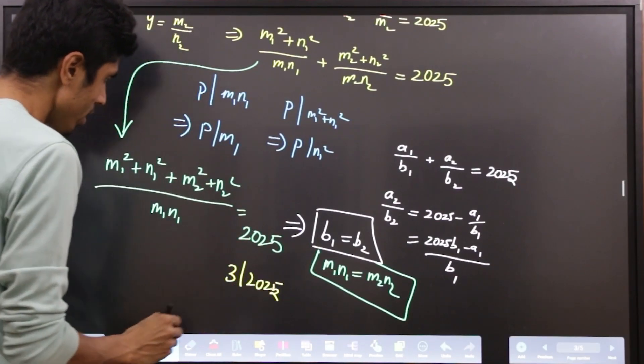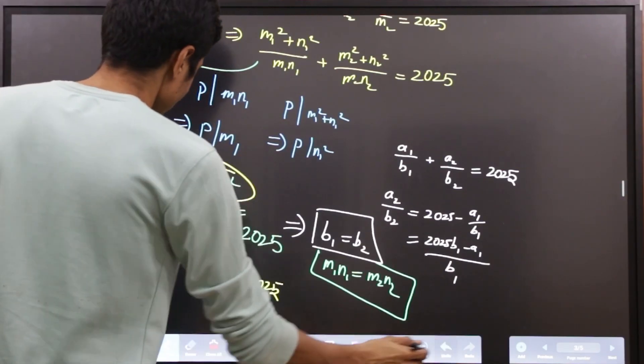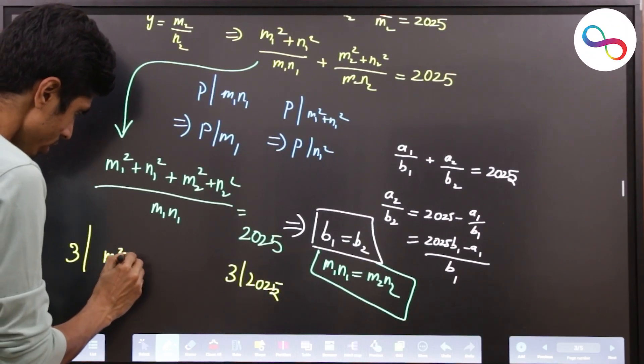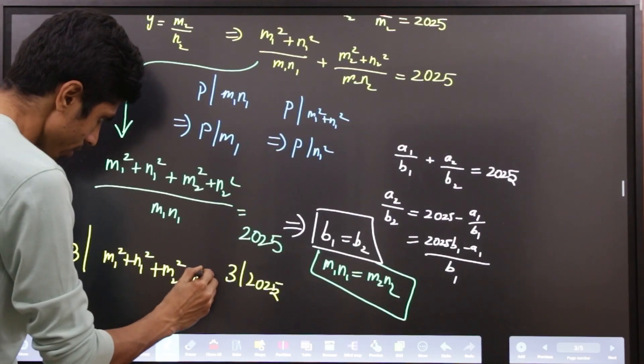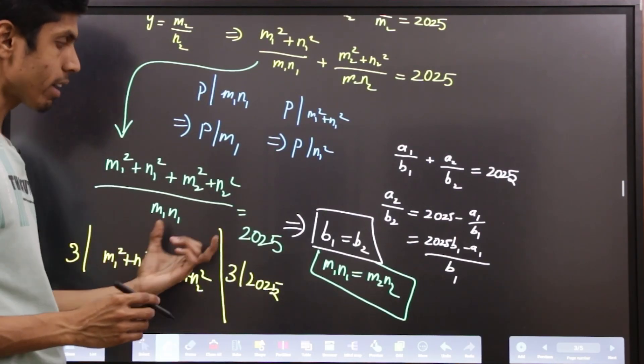Therefore, the numerator of this fraction must be divisible by 3. So 3 divides m1² + n1² + m2² + n2². We will just use this fact and arrive at a contradiction.